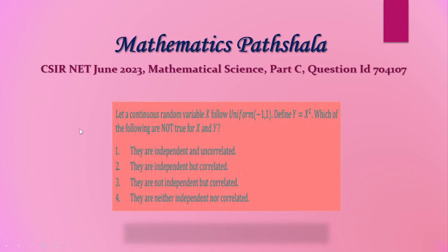The problem is: given that a continuous random variable X follows uniform distribution over minus 1 to 1, and Y is defined as Y = X². Which of the following are not true for X and Y? So here 4 options are given, and we have to find which of the following are not true — that is, we have to identify the false options.